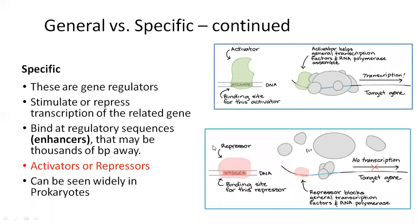When we talk about specific transcription factors, they basically provide gene regulation — determining whether a gene is expressed or suppressed. We have activators or repressors. For example, the activator protein, like in the operon, is attached and activates RNA polymerase so transcription starts. The repressor is attached to the promoter, blocking RNA polymerase attachment, and so transcription is suppressed.